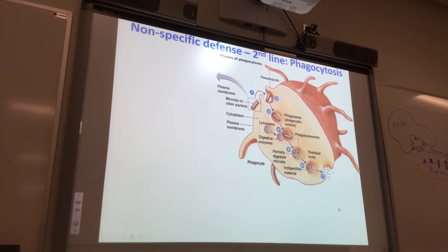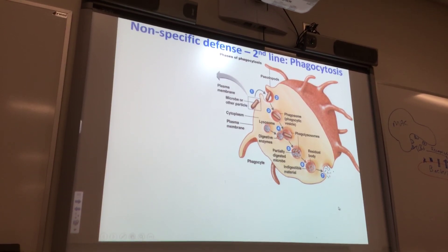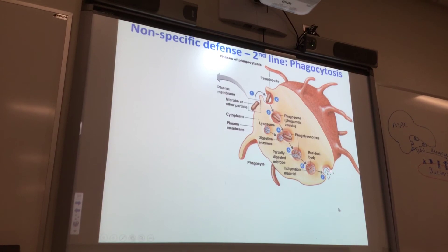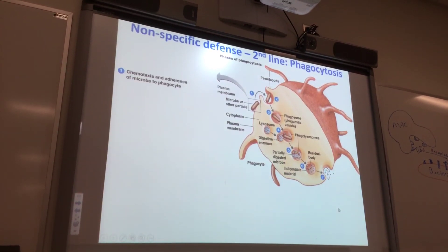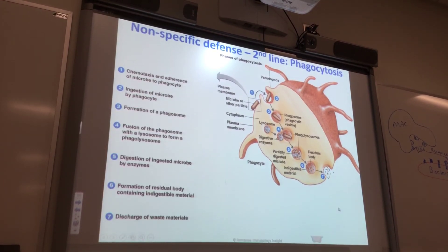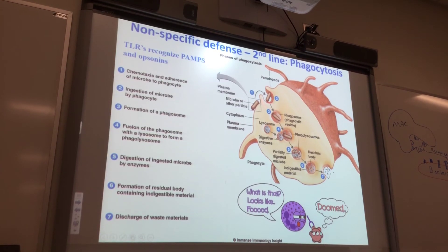Here's the process of phagocytosis. Here's the microbe — it could be coated with PAMPs. You'd have toll-like receptors on the macrophage. At the end of phagocytosis, the macrophage releases material that's no longer toxic — it did all this to the foreign invader to chop it up. The toll-like receptors on immune system cells recognize PAMPs on the foreign invaders, and toll-like receptors also recognize opsonins — like complement proteins.